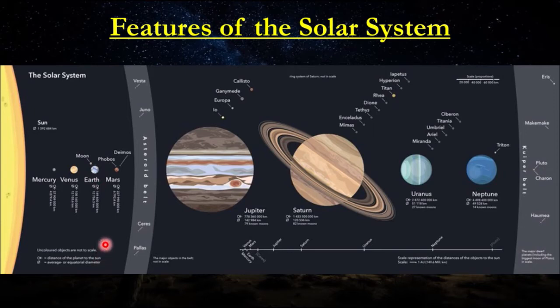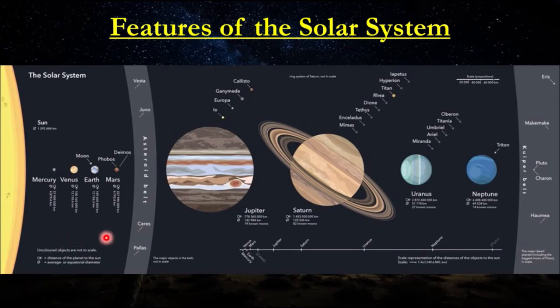One important thing to understand is that although the Sun is exerting a gravitational force on the Earth — which is why Earth is rotating around the Sun — the Earth is also applying a gravitational force onto the Sun as well. The person who came up with the idea that all objects exert a gravitational force on each other was none other than Sir Isaac Newton, famously inspired by an apple falling from a tree.